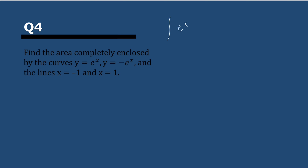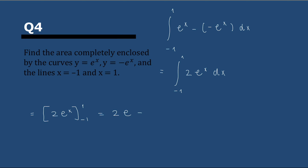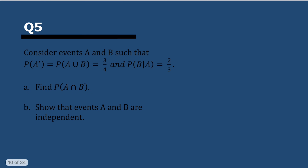Next question: find the area enclosed by the curves y = e^x and y = −e^x, and the lines x = −1 and x = 1. This is the integral of one minus the other with bounds −1 and 1. e^x − (−e^x) is 2e^x. Since the integral of e^x is e^x, we have 2e^x evaluated from −1 to 1. Substituting: 2e^1 − 2e^(−1), which we can write as 2e − 2/e.